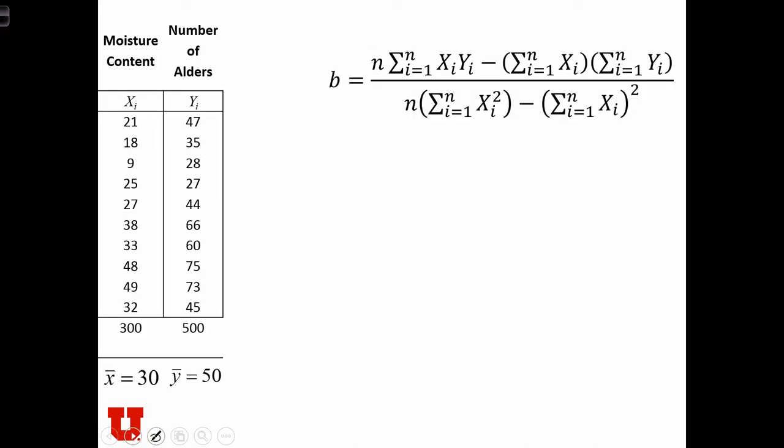Suppose we have a sample of locations. And at each location, we know the moisture content, x, and the number of alder trees that grow at that location, y. In this case, x is our independent variable, and it's going to have an impact on our dependent variable. So the moisture is going to have an impact on how many trees can grow there.